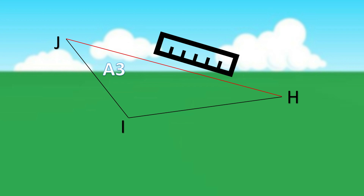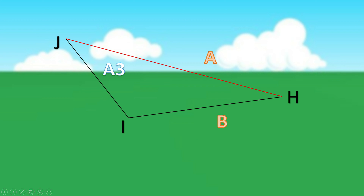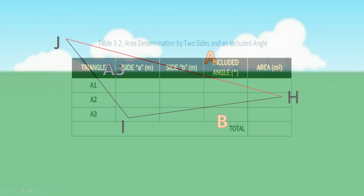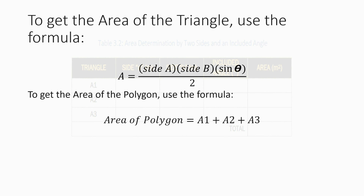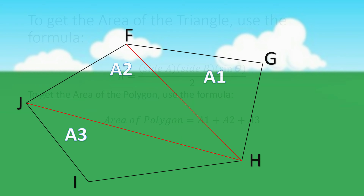Measure any two sides of the first triangle chosen and record these measurements as sides A and B. Determine the included angle between sides A and B and record these on Table 3.2. To get the area of the triangle, use one-half times the product of side A, side B, and the sine of the included angle. To determine the whole area of the polygon, take the summation of areas A1, A2, and A3. Repeat steps 3 to 4 for the chosen second and third triangles of the polygon.